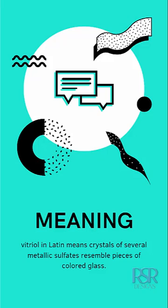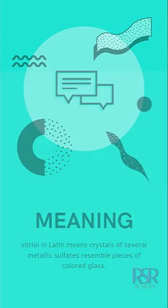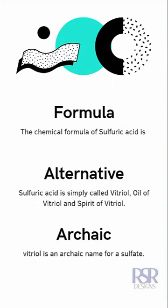The name vitriol comes from Latin and is related to metallic sulfates. Vitriol refers to the color of the glass-like crystals of metallic sulfates in Latin. The chemical formula, as everybody knows, is H2SO4.